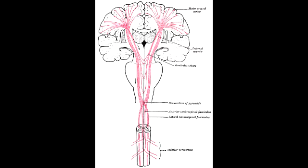What is upper motor neuron lesion? Upper motor neuron lesion is a lesion of the neural pathway above the anterior horn of the spinal cord or the motor nuclei of the cranial nerves.